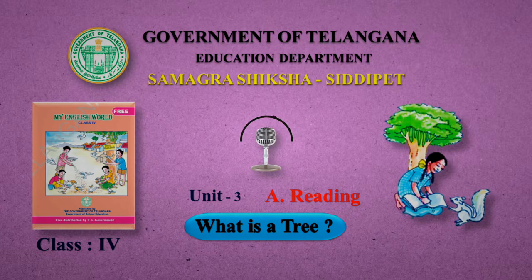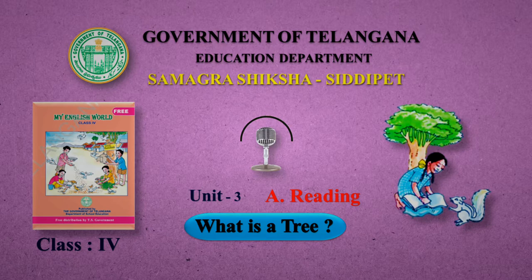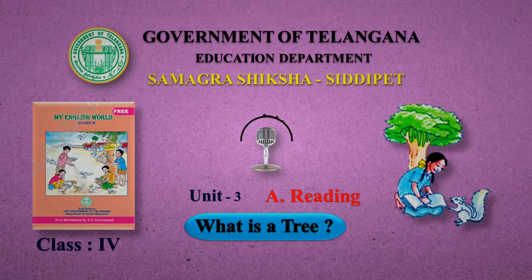Amu and Bittu meet a homemaker. She has a bundle of sticks on her head. Amu: Pinni, what is a tree? Homemaker: It is firewood to cook meals for my family.